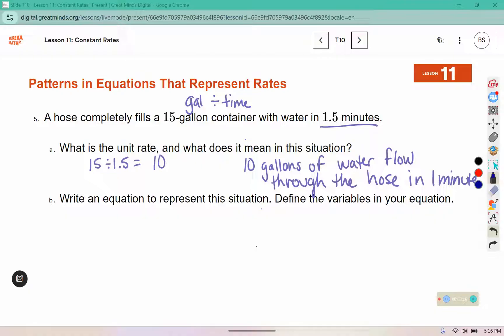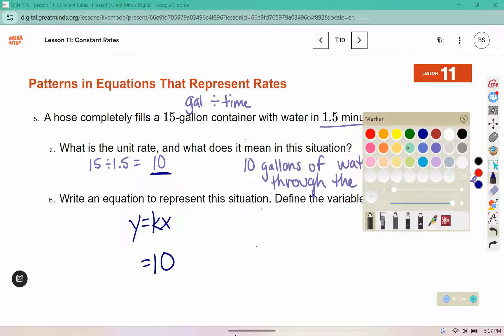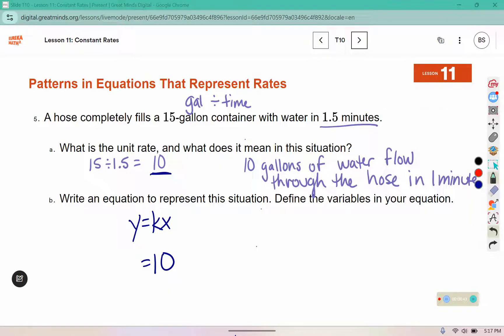Write an equation to represent the situation. Define your variables. Usually we use y equals kx. Here we might use different letters, but we know the k value is 10, so we're going to start there. I need to figure out what letter or variable I'm going to use for y and x. I have gallons and I have minutes. I'm going to use g for gallons and m for minutes.